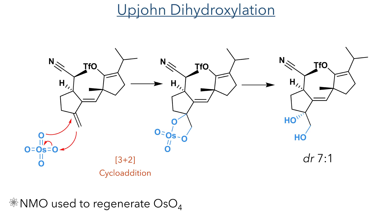This newly formed alkene then took part in an Upjohn dihydroxylation. This is a cycloaddition with osmium tetroxide which forms a cyclic intermediate, which upon hydrolysis yields a 1,2-dihydroxyl compound. This reaction uses N-methylmorpholine N-oxide to regenerate the osmium tetroxide, which is used in a catalytic amount. This produced the target dihydroxyl compound in a 7 to 1 dr.